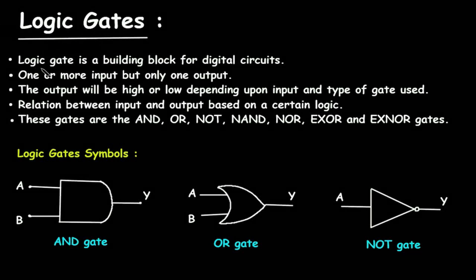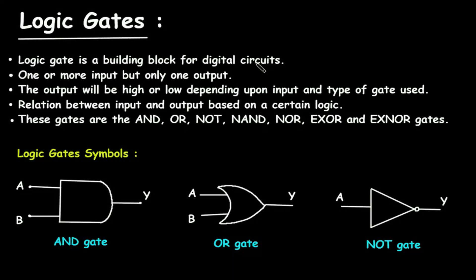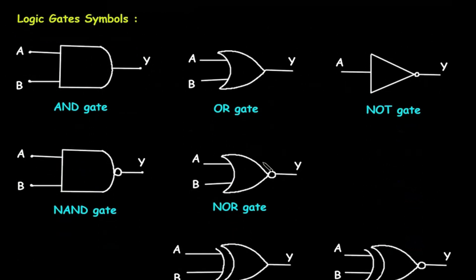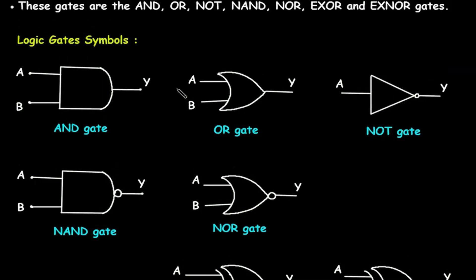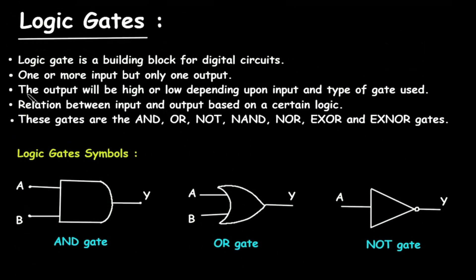Logic gates are a building block for digital circuits. Logic gates have one or more inputs but only one output. For this gate, we can see that there is only one input and one output. For most of the other logic gates, there are two inputs and one output. The output will be high or low depending upon the input and type of gate used. The relation between input and output is based on a certain logic.